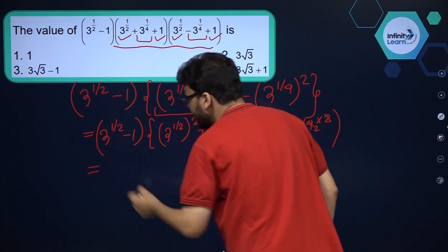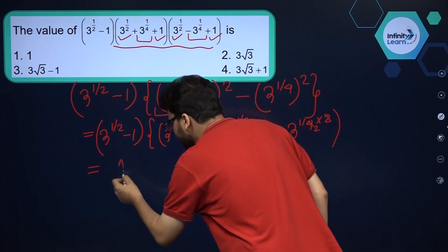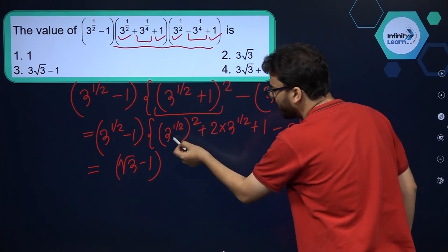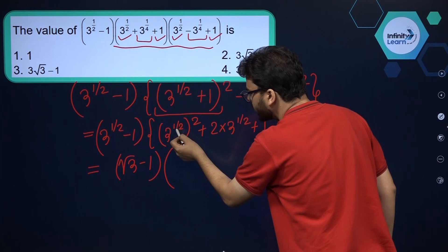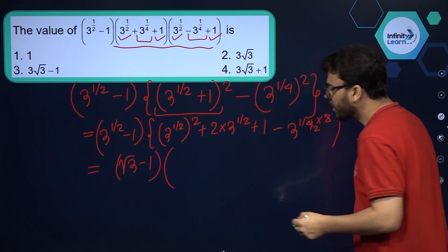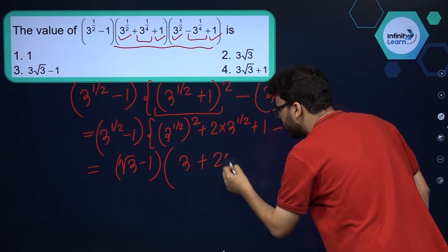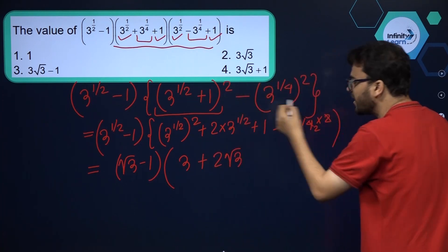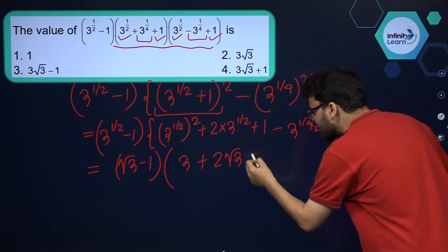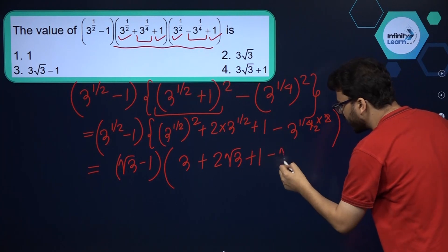We can write 3 raised to the power 1 by 2 as root 3. So this is root 3 minus 1, and over here power of power gets multiplied — 1 by 2 into 2 is 1 only. So this is nothing but 3, and this is plus 2 root 3 because 3 raised to the power 1 by 2 can be written as root 3, and this is plus 1 over here, minus root 3 over here.